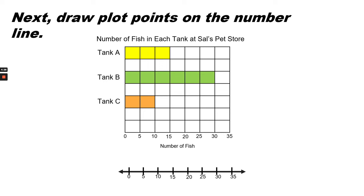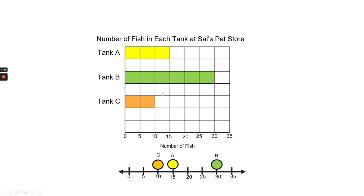Next, plot the points on the number line. We know that tank C has 10 fish. So, we're going to plot 10 fish and put a C above.